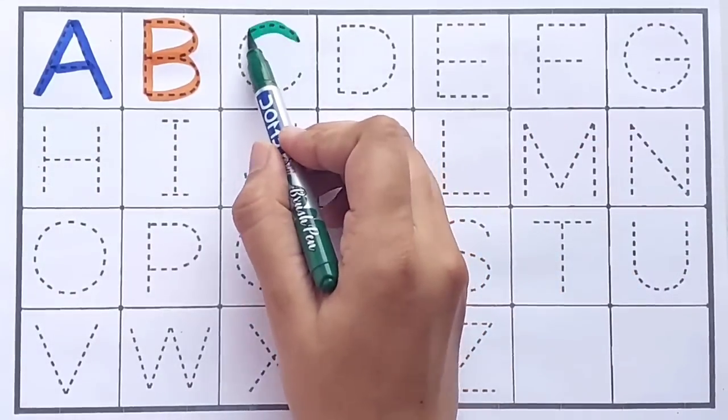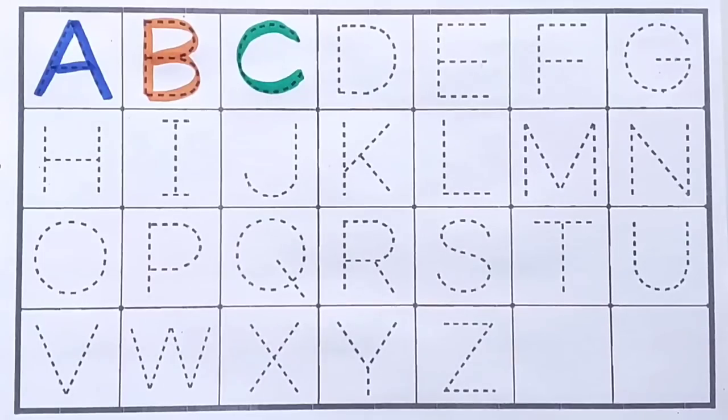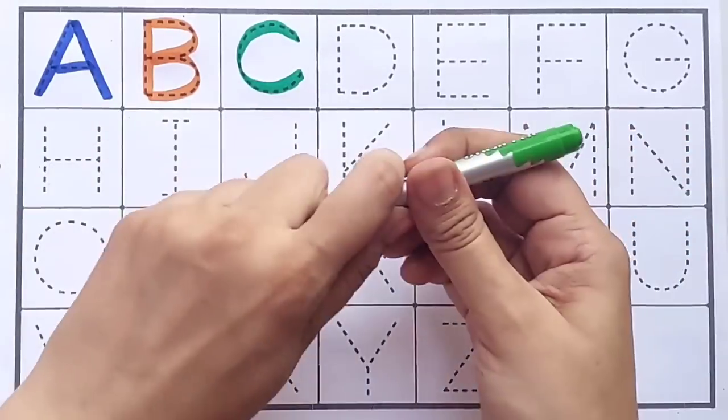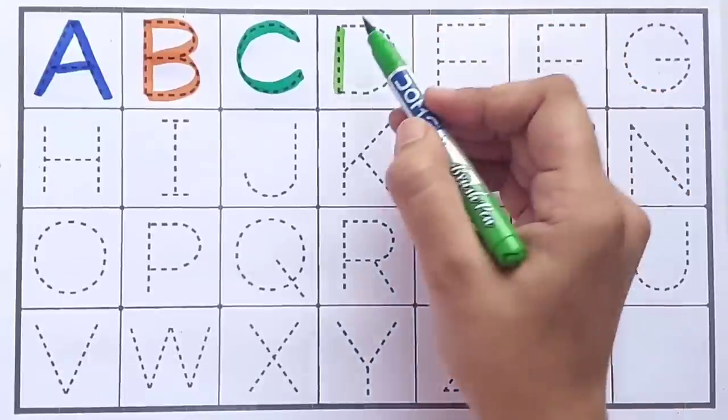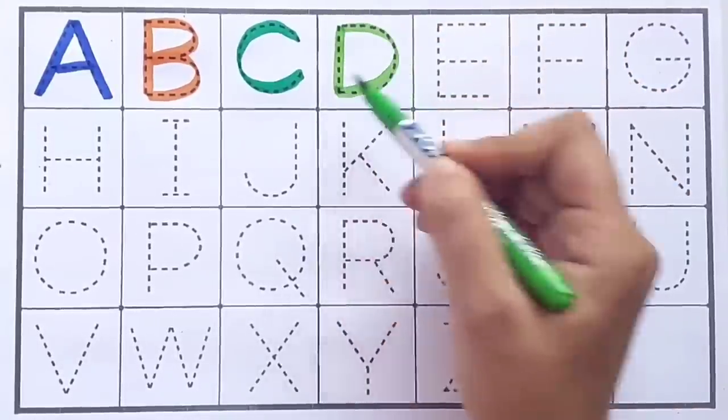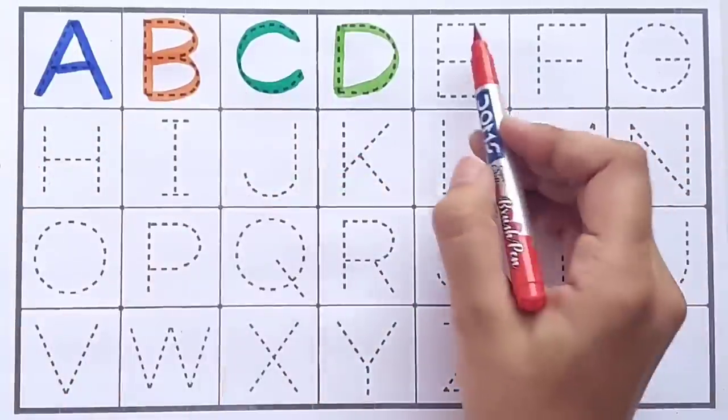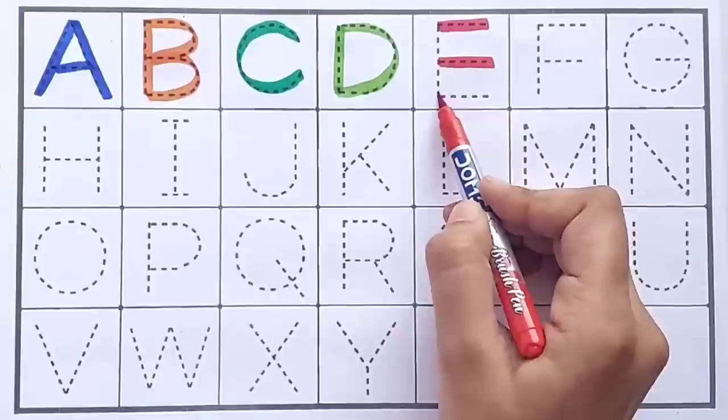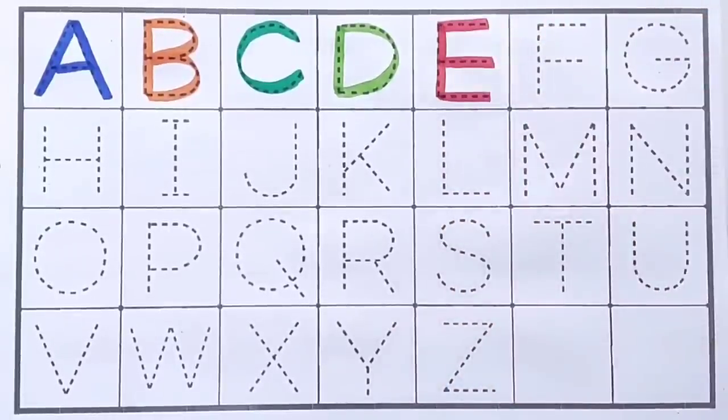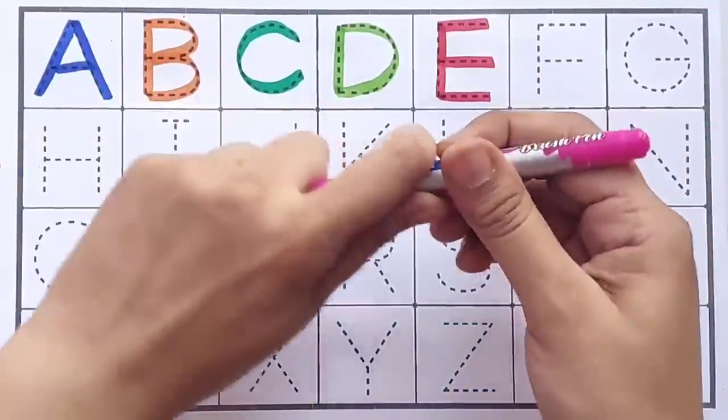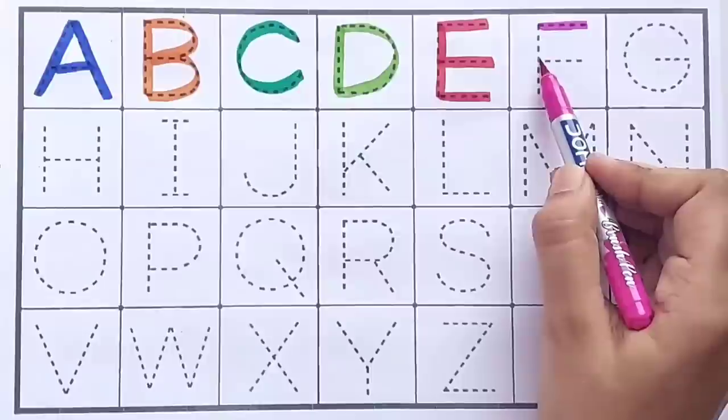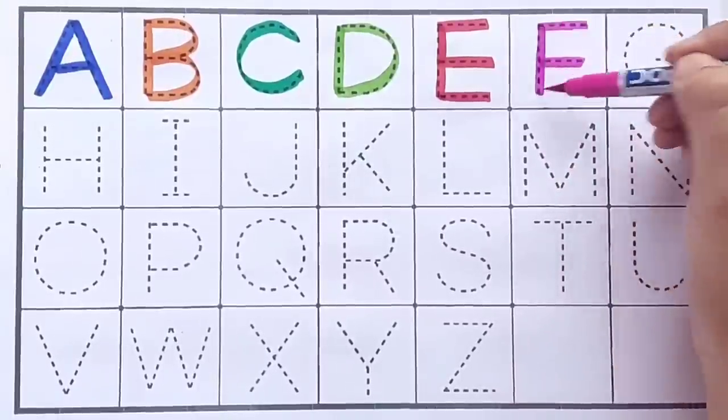C, C for cat, light green color. D, D for dog, red color. E, E for elephant, pink color. F, F for fish, yellow color.